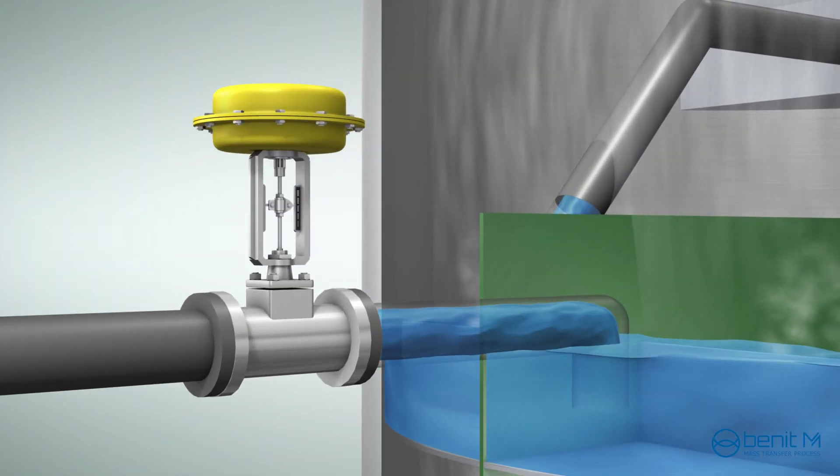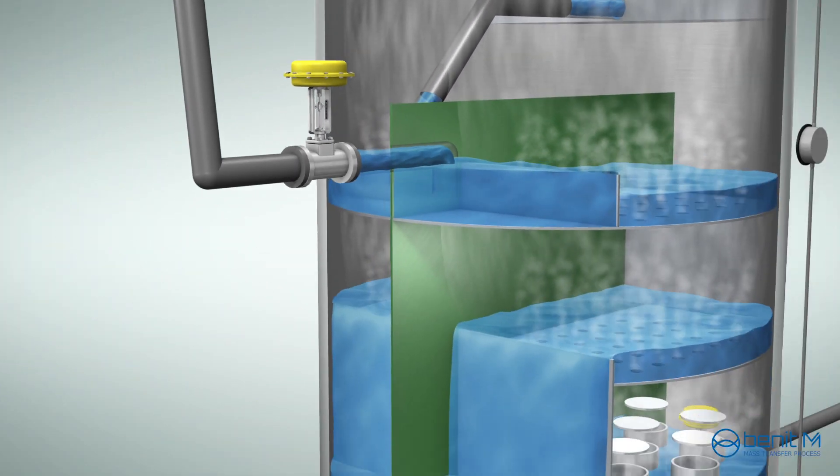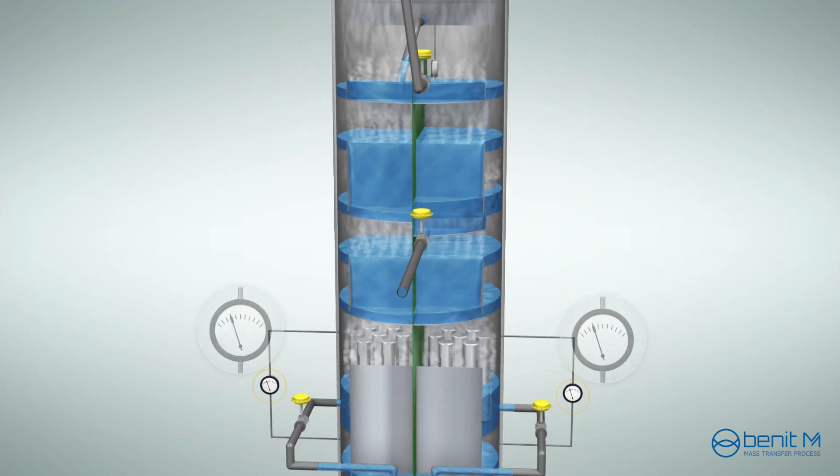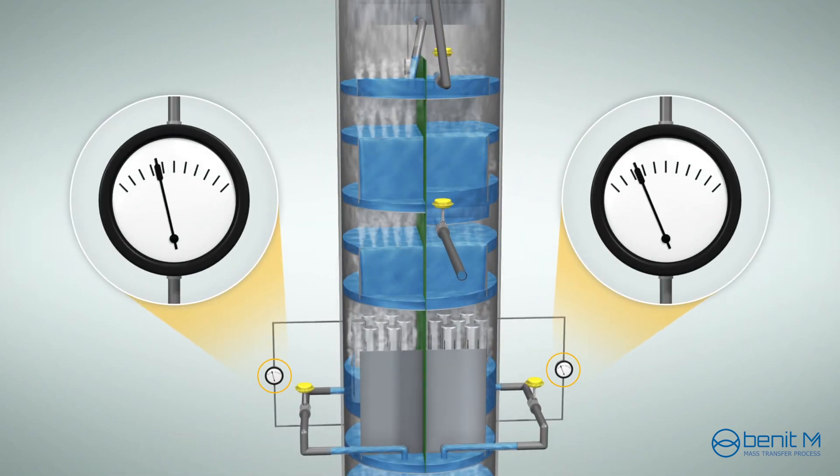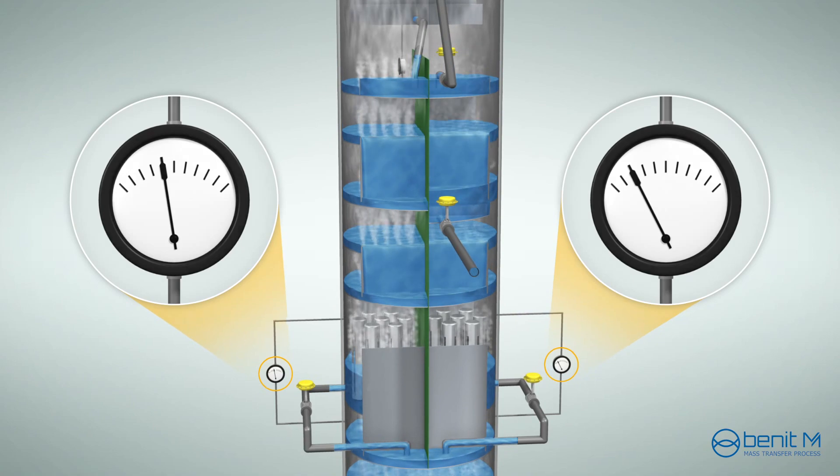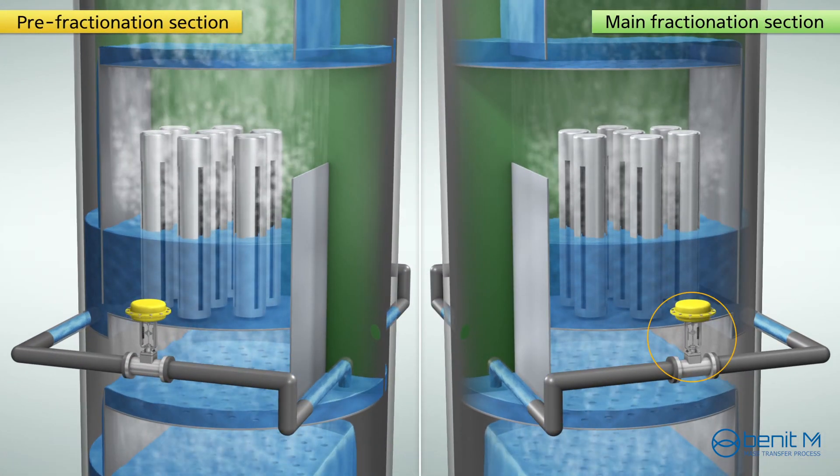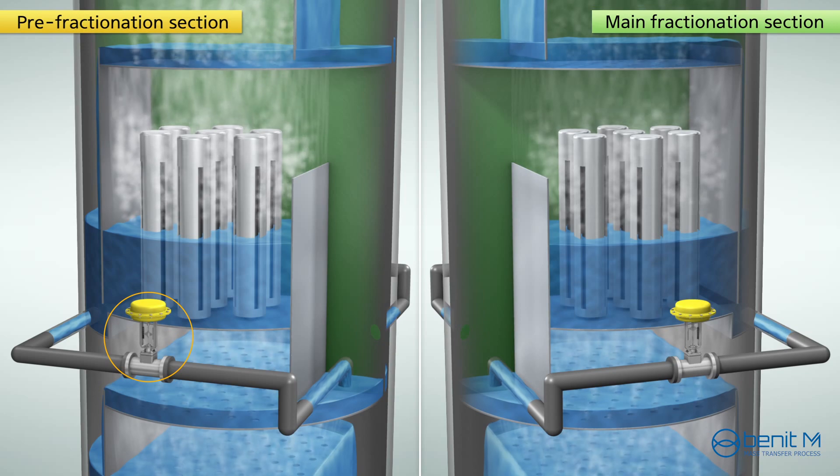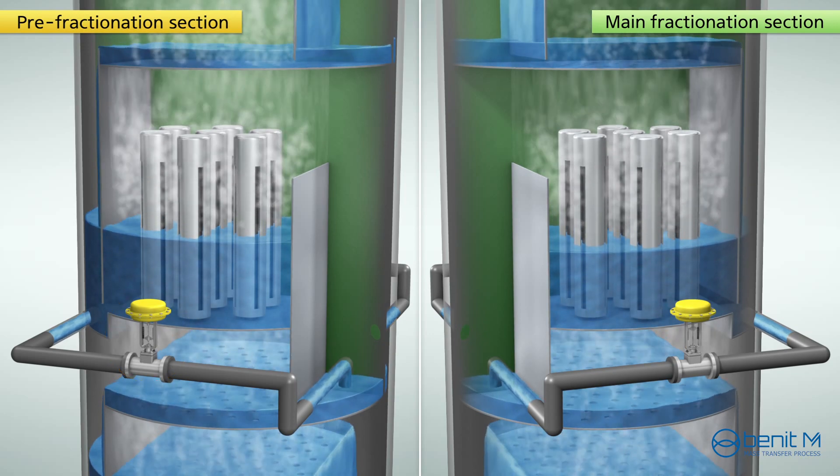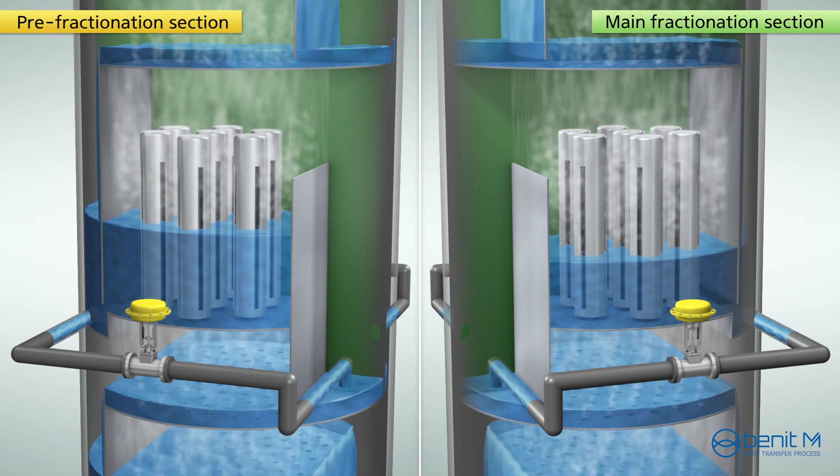When the liquid load in main fractionation section increases, the vapor split ratio needs to be increased in this section too. Then, lower the liquid level on the chimney tray in this section, while lifting the liquid level on the chimney tray in pre-fractionation section.